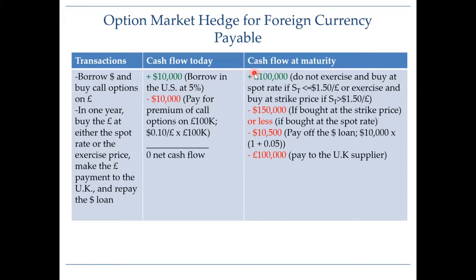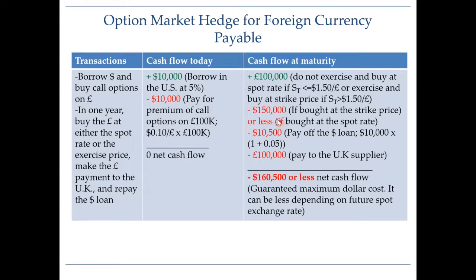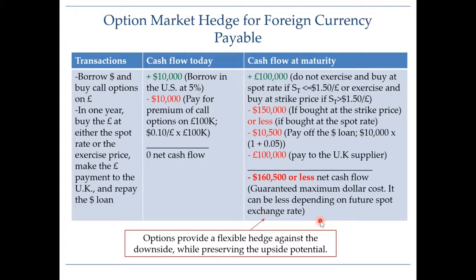Once we receive the 100,000 pounds from exchanging dollars, we send payment to the UK supplier. The net effect is a total cash outflow of $160,500 or less — this is our guaranteed maximum dollar cost. With an options hedge, you get a range of outcomes rather than a single fixed number as with a forward hedge or money market hedge. The advantage is flexibility: it sets a maximum cost while preserving the upside potential to achieve a lower total dollar cost.